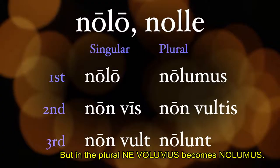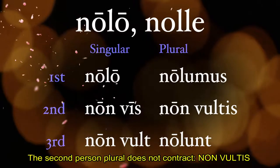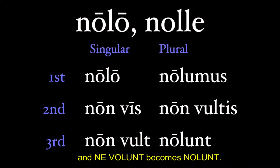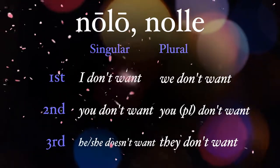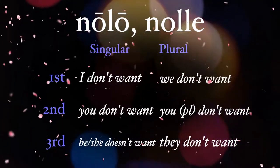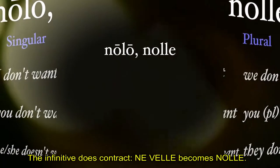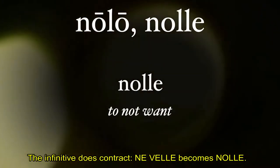But in the plural, ne volemus becomes nolumus. The second person plural does not contract: non vultis. And ne vollunt becomes nolunt. In English: I don't want, you don't want, he/she doesn't want, etc. The infinitive does contract though — ne velle becomes nolle.